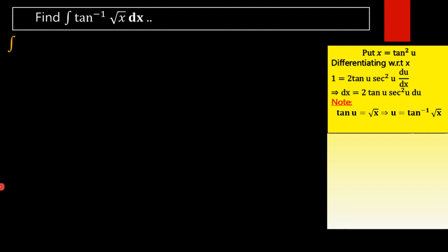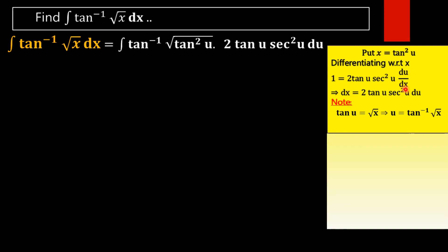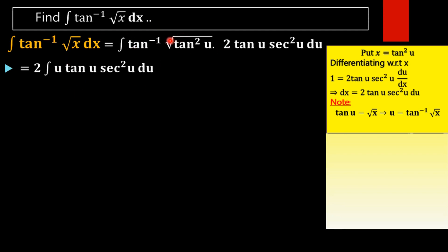Now we substitute x = tan²(u) and dx = 2·tan(u)·sec²(u)·du into the integral. Since √(tan²u) = tan(u) and tan⁻¹(tan(u)) = u, the integral reduces to 2∫u·tan(u)·sec²(u)·du.